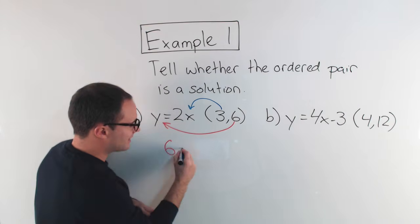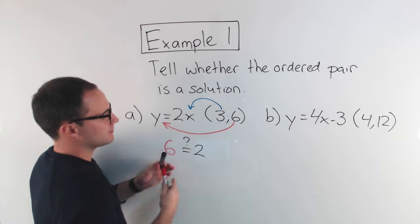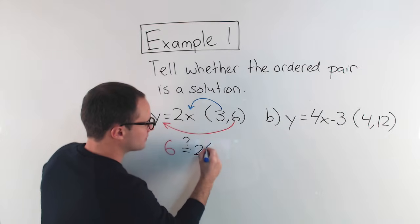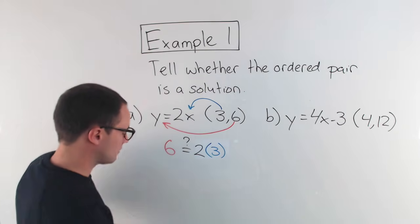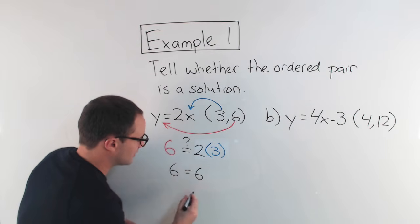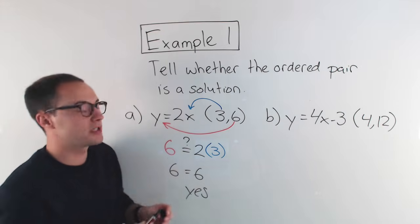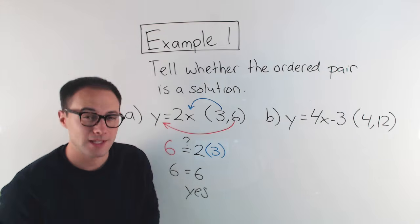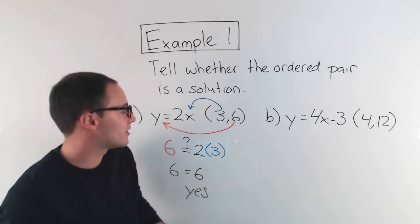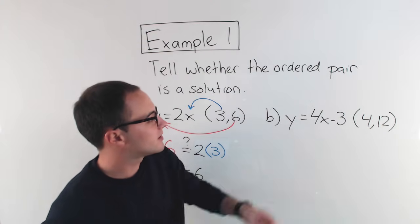So when I do that, I'm going to get 6. And the question is that equal to 2 times 3? Well, 2 times 3 is 6, so we get 6 is equal to 6. So yes, 3,6 is a solution to that equation. Now, is it the only solution? That's another question. We won't get into that yet. But 3,6 is a solution. Let's do the next one.